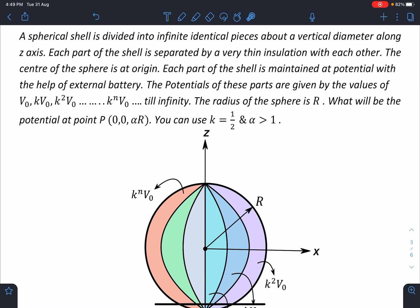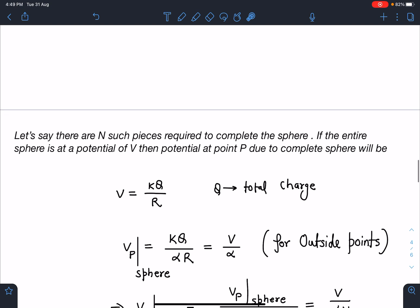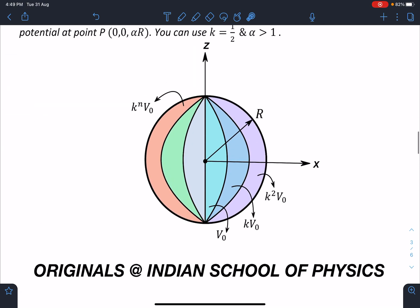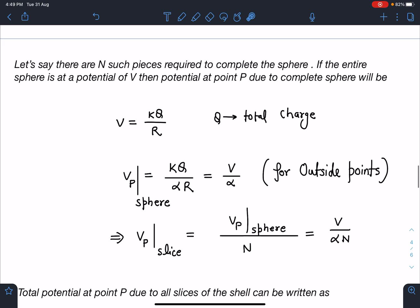This is the diagram of this problem. By the way, it's an original problem. Here we can simplify this problem. Let's say there are N such pieces, capital N. I am giving the number, so N such pieces required to complete the sphere. If the entire sphere is at potential of V, then the potential at point P due to the complete sphere we can say it will be kQ by R, where Q is the total charge on the sphere.